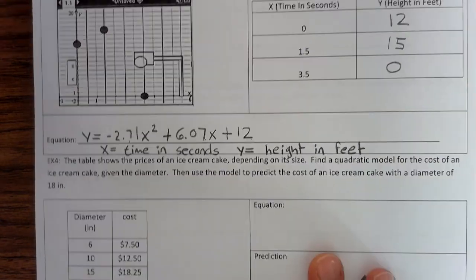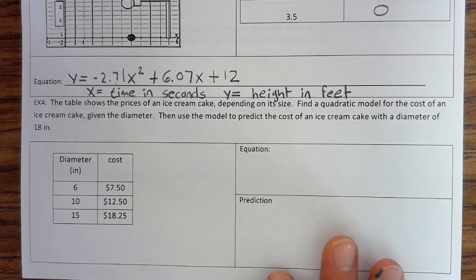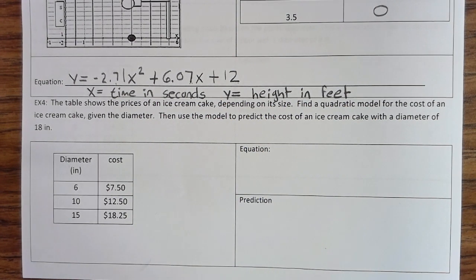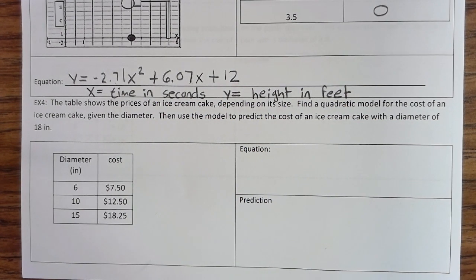All right, example four. The table shows the price of an ice cream cake, depending on its size. Find a quadratic model for the cost of an ice cream cake. Given the diameter, then use the model to predict the cost of an ice cream cake with a diameter of 18 inches.